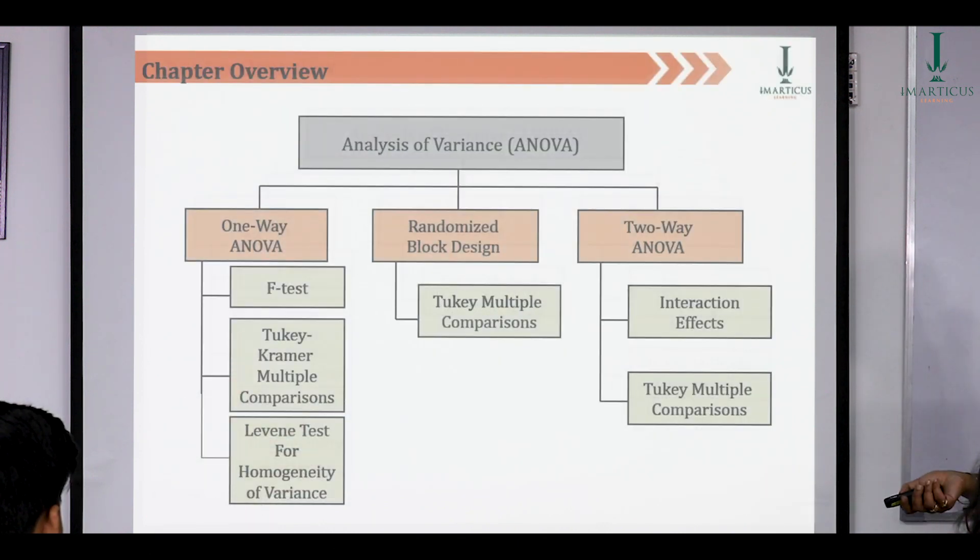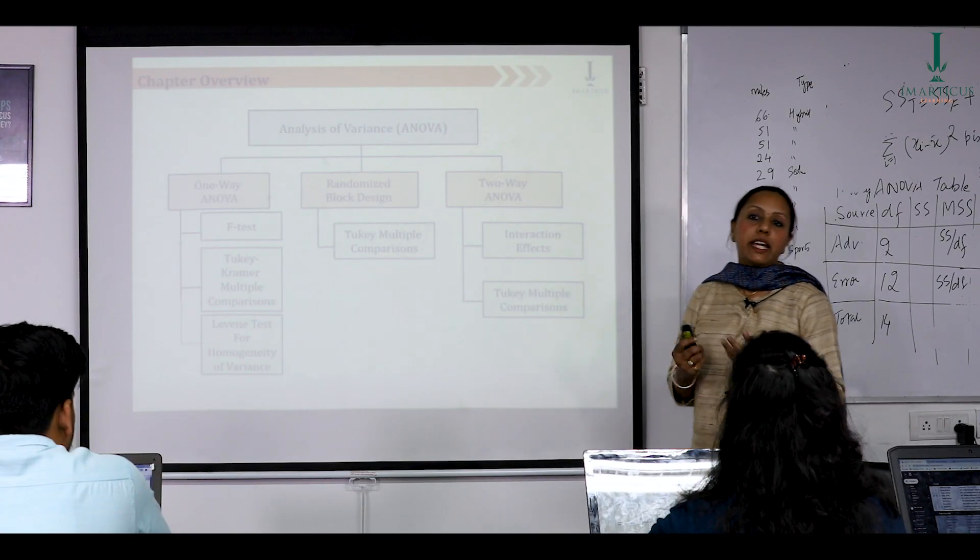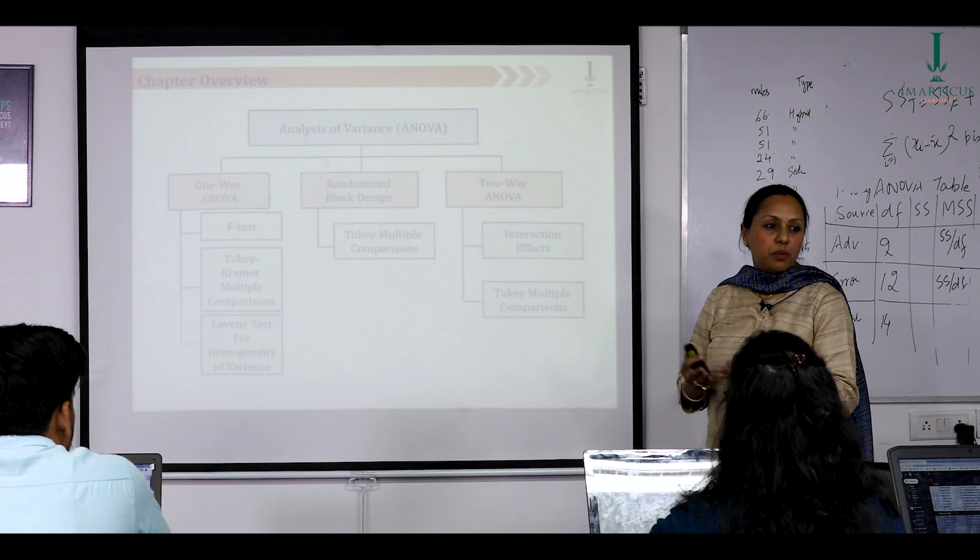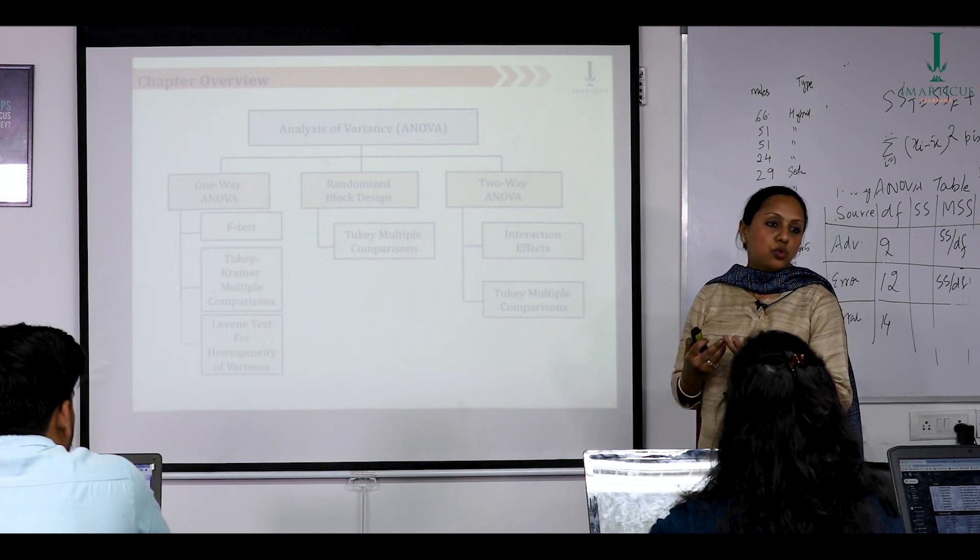We'll start with ANOVA. We have one-way ANOVA, randomized block design, as well as two-way ANOVA. One-way ANOVA, we only talk about one factor, one independent categorical variable. When we have randomized block design, we create a variable called a block variable, and we have two-way ANOVA where we will have two independent categorical variables.